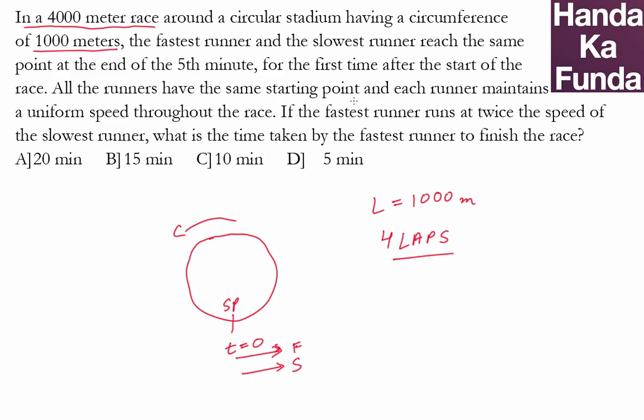All the runners have the same starting point and each runner maintains a uniform speed. If the faster runner runs at twice the speed of the slowest runner, then when will they meet? And where will they meet? It's given that they meet after the fifth minute. So where will this meeting be?